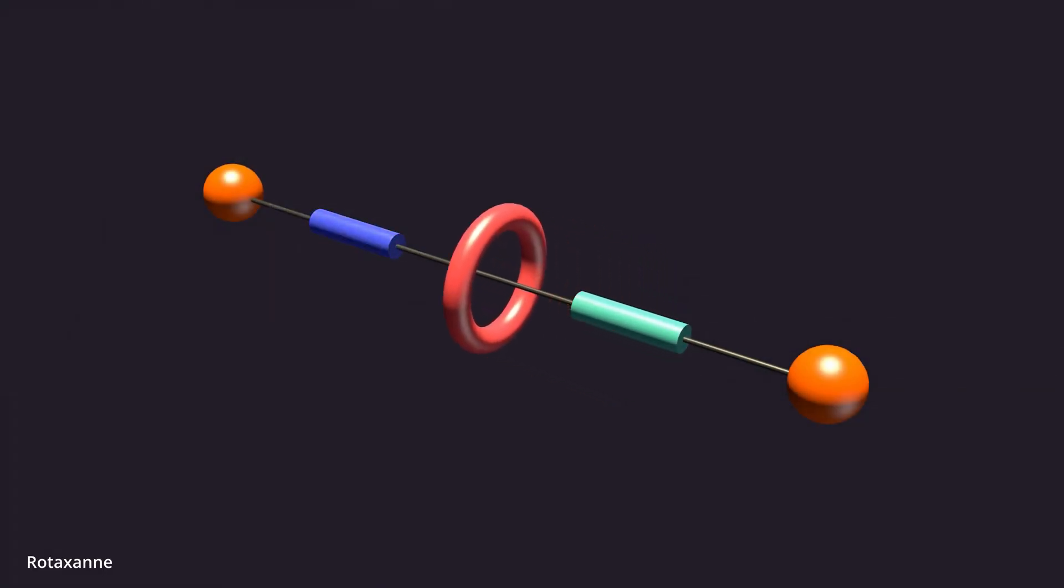In 1991, Stoddart developed rotaxane, which is essentially a threaded molecular ring on a thin molecular axle, and demonstrated the ring was able to move along the axle.